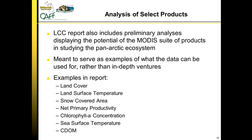In that same report there are preliminary analyses. We did examples on land cover, land surface temperature, snow covered area, net primary productivity, chlorophyll a concentration, sea surface temperature, and colored dissolved organic material. These examples are just meant to serve as demonstrations of what the data is capable of and what these data look like, rather than in-depth investigations.